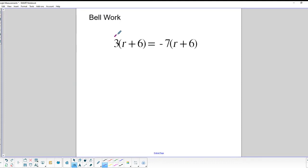Remember, we're going to use the distributive property first to get rid of the parentheses. So we'll do 3 times R, which is 3R, and 3 times 6, 3 times positive 6, which is positive 18.